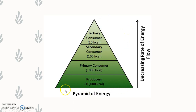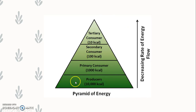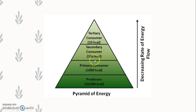This pyramid of energy is upright — the first trophic level is wide, then less wide, then narrow. Energy content goes on decreasing as we move from bottom to top.